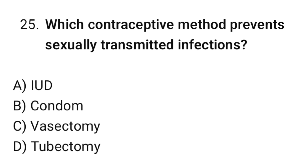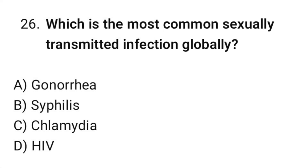Question No. 25: Which contraceptive method prevents sexually transmitted infections? The correct option is B. Condom. Question No. 26: Which is the most common sexually transmitted infection globally? The correct option is C. Chlamydia.